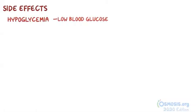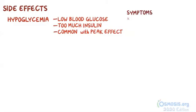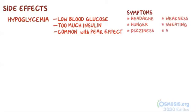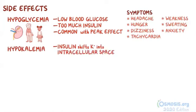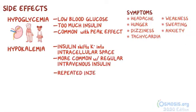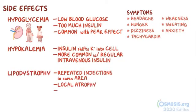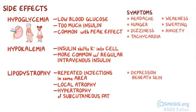The main side effect of insulin therapy is the risk of hypoglycemia, or low blood glucose, due to the administration of too much insulin. This is more common with insulins that have a peak effect. Symptoms of hypoglycemia include headache, weakness, hunger, sweating, dizziness, anxiety, and tachycardia. Individuals with renal impairment, the elderly, and children younger than 7 years of age are at increased risk. Insulin can also cause hypokalemia, since it shifts potassium into intracellular space, and repeated injections in the same area can cause lipodystrophy — local atrophy or hypertrophy of subcutaneous fat near the injection area — which is why it's important to switch injection sites frequently. Insulin can also cause moderate weight gain.